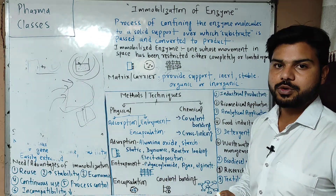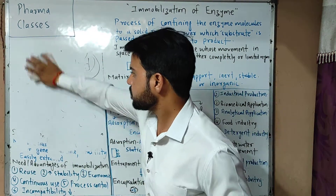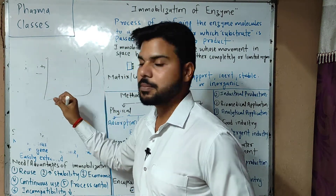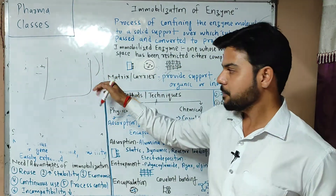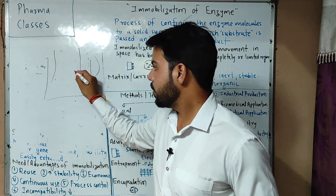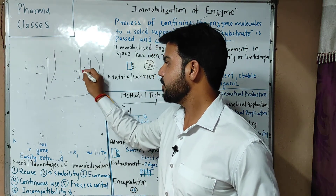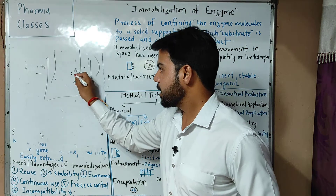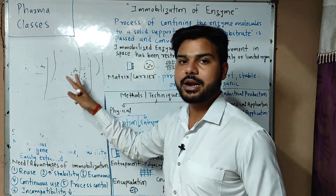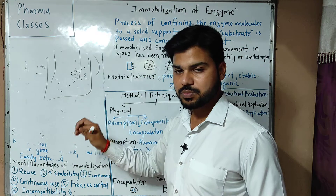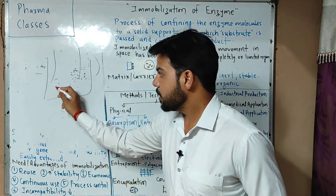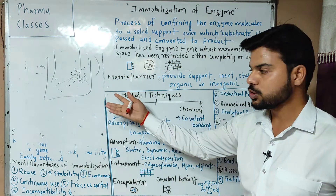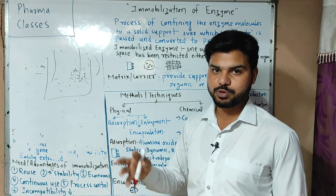In the electrode deposition process, we use the help of an electrode as the carrier. The enzyme is in solution, a current is applied, and the enzyme molecules move towards the carrier electrode due to electrostatic force, binding to it. This is also an adsorption process.